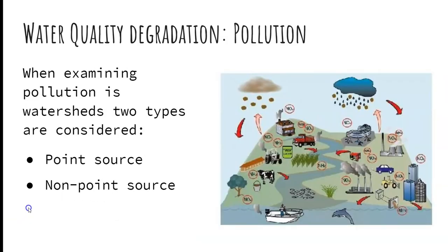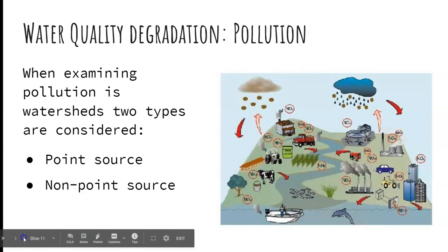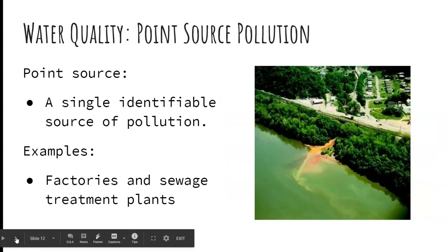When we're examining the pollution in the watershed and looking for the source, we look for two types of sources: one is a point source and the other is called a non-point source, which I'll explain in the next couple of slides.